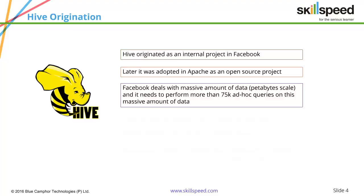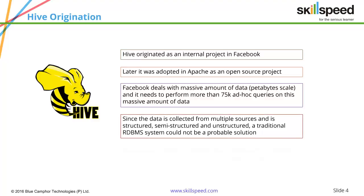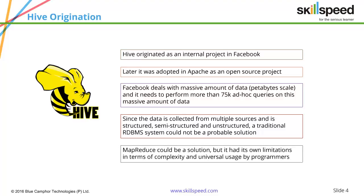Most of the engineers at Facebook came from an RDBMS background and were familiar with SQL queries. The data was coming from multiple sources, dumped into Hadoop, and engineers were asked to write ad hoc queries to query this data. The problem was that all queries needed to be written in MapReduce, since MapReduce was the only way. SQL engineers found it very difficult to interact with Hadoop, and bringing an RDBMS solution into Hadoop was completely out of question, since Hadoop cannot fit the traditional RDBMS structure and schema.